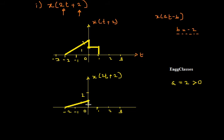The width will remain the same, but the amplitude gets divided by 2. This is how the final signal looks: this amplitude will be 0.5 and this amplitude will be 1. The shape of the signal and the width remain the same — only the amplitude gets reduced. That will be x of 2t plus 2.